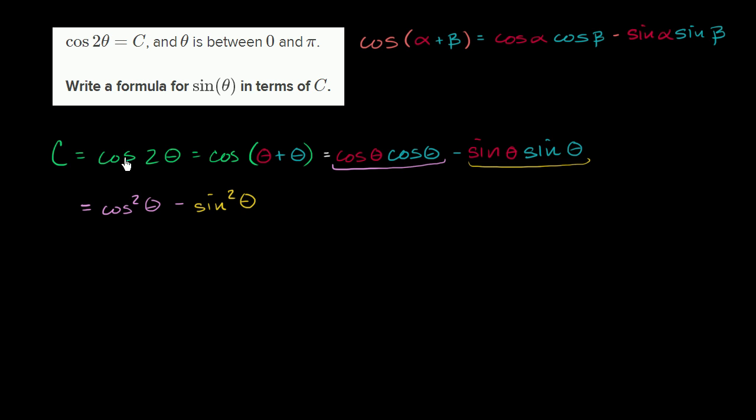So let's see, we've been able to rewrite c in terms of cosine squared theta and sine squared theta, but ideally we just want to write it in terms of sine theta so that we can solve for sine theta. So if we can re-express cosine theta in terms of sine.